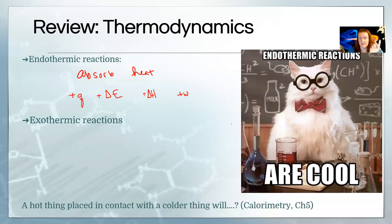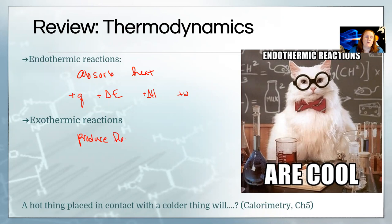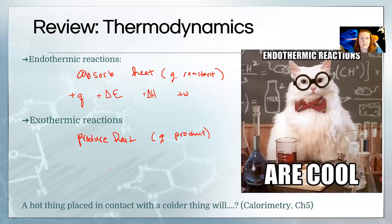Work is done on the system, so it's a positive W. It is not done by the system because it has to take energy in, so it has to have work done on it to do that. For exothermic reactions, they produce heat. When we say absorbs heat, that means heat is a reactant. When we say something produces heat, that means heat is a product. So that's a review from our thermodynamics chapter.